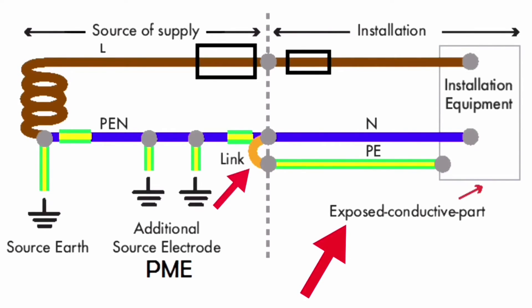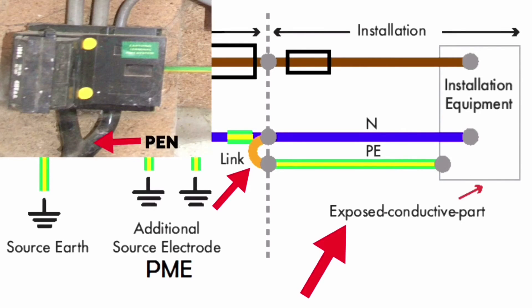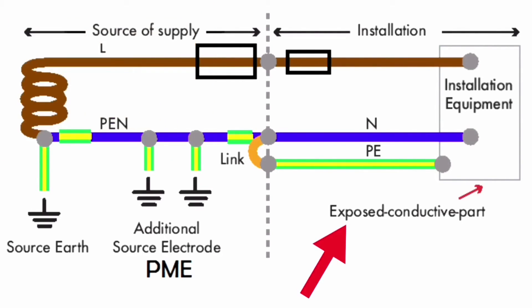The Neutral and Earth are separate for the installation. This occurs in the cutout. The PEN conductor comes in, a separate Neutral and separate Earthing Conductor come out from the same position. The exam likes to say these are connected together via a solid link.